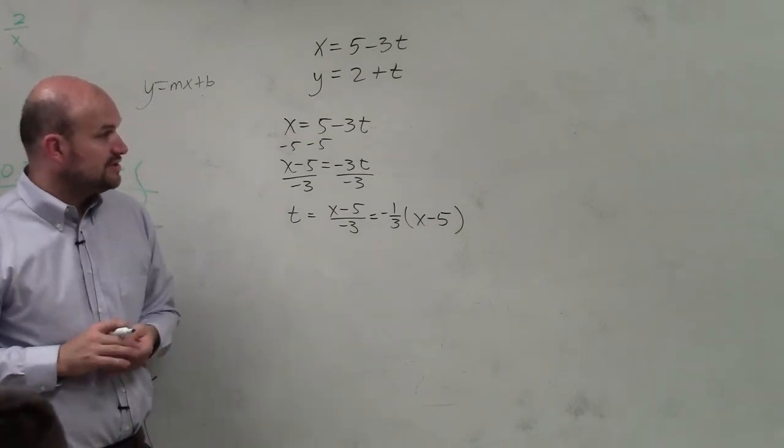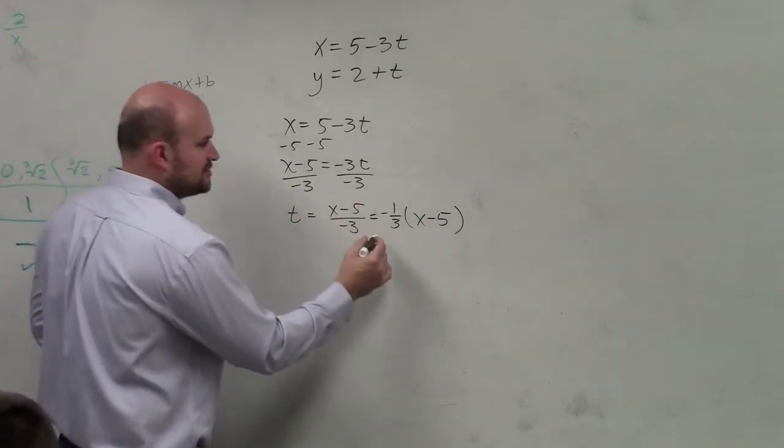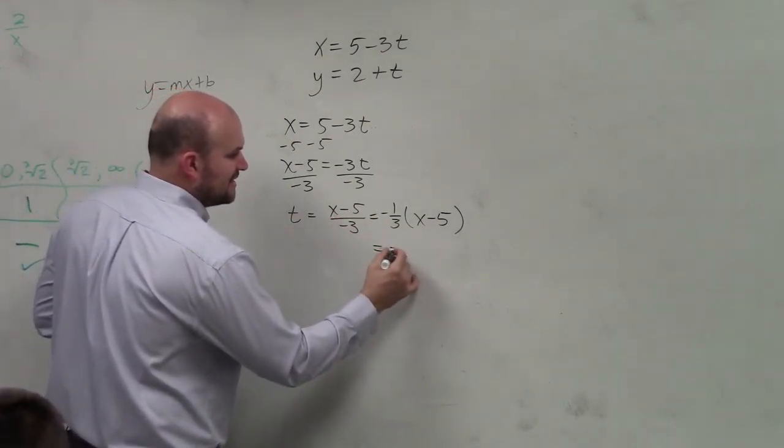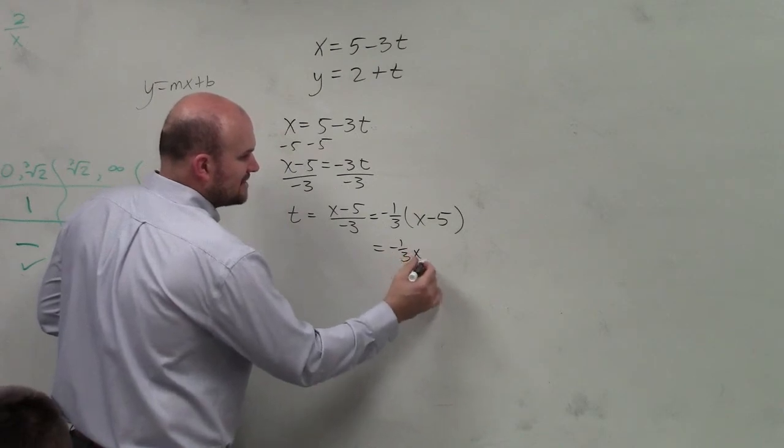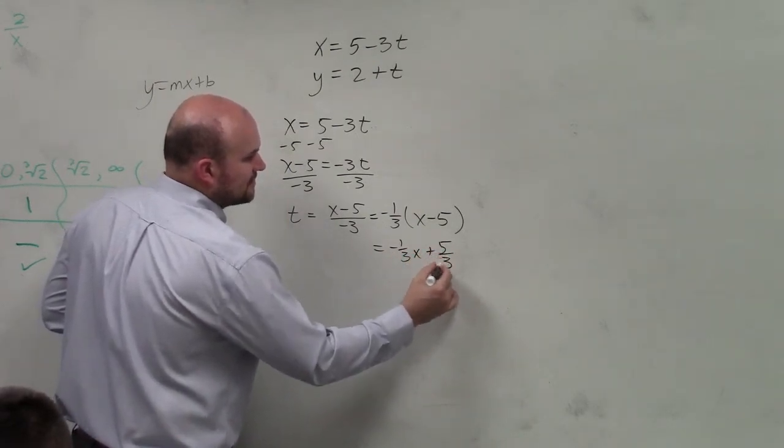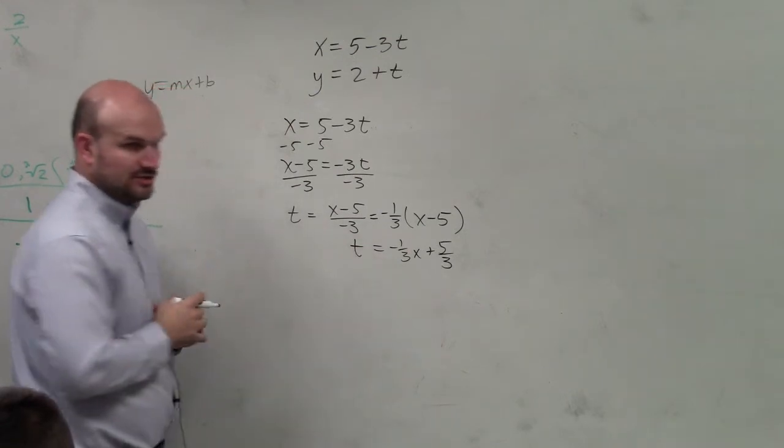In reality, I can actually distribute that even further. I could say that's negative one-third x plus five-thirds. That is what t is equal to.